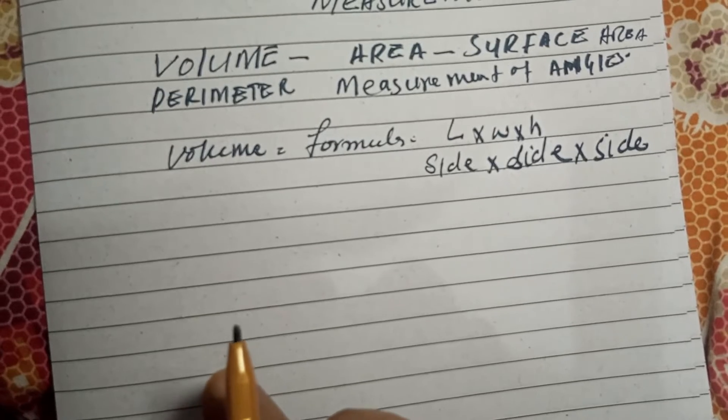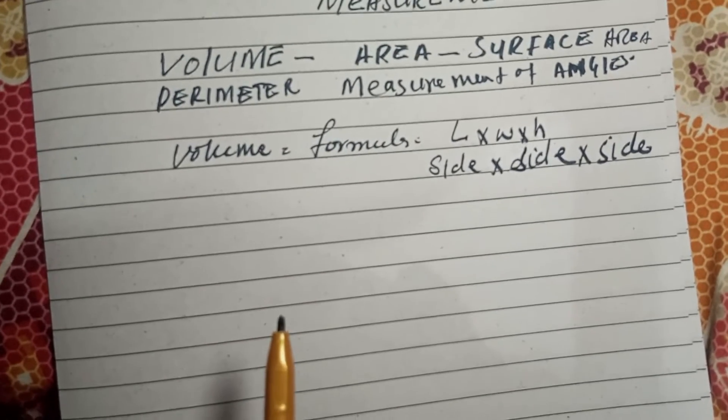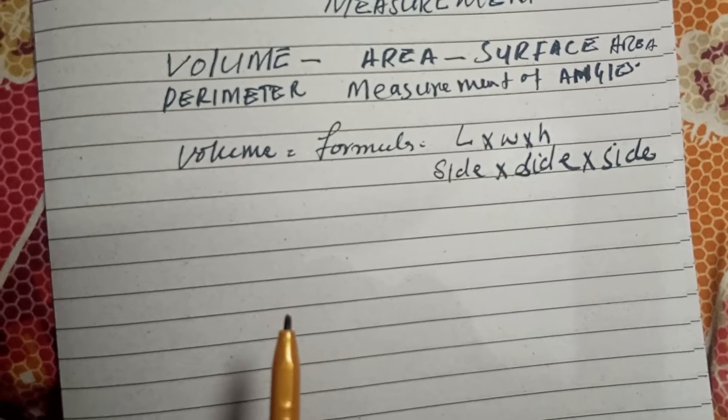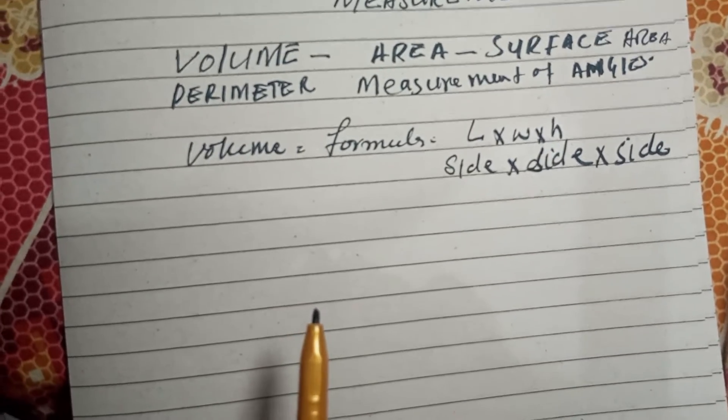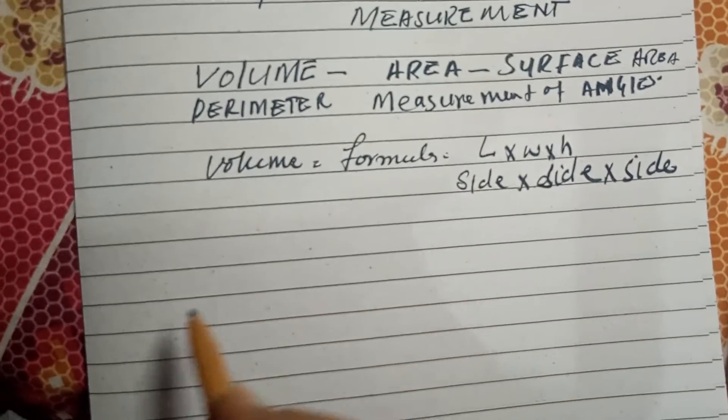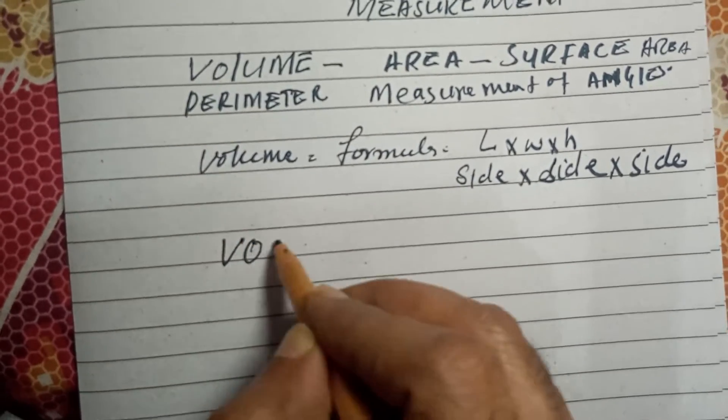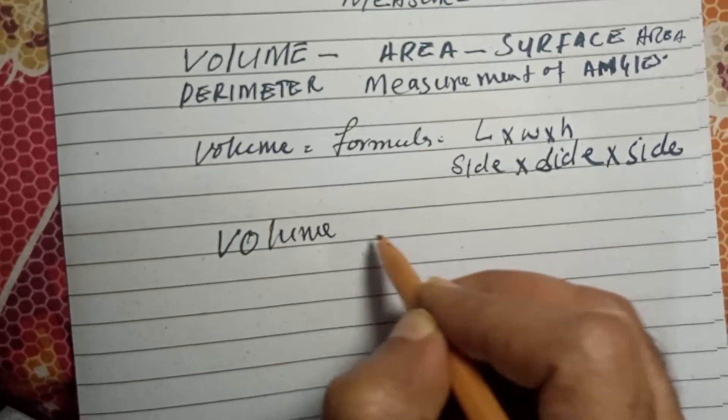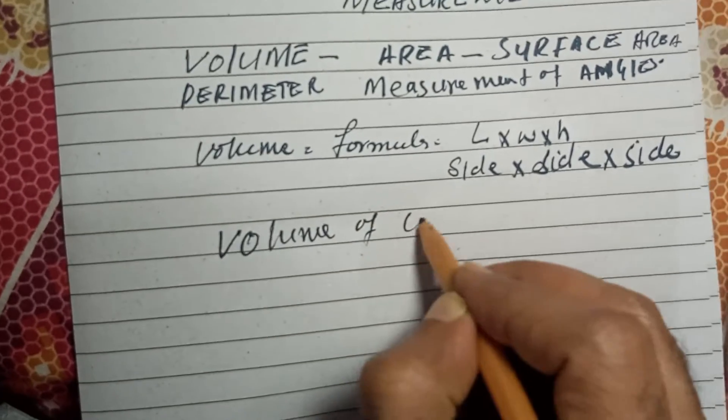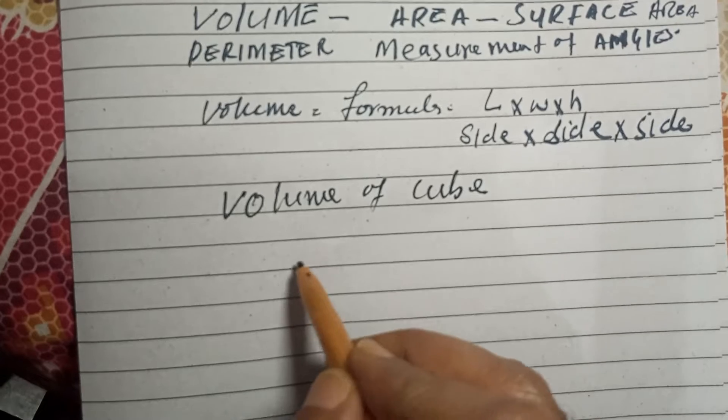When three sides multiply we get the volume. If we have any length of any object we can easily find the volume of it. So first I'm going to solve the problem: volume of cube.